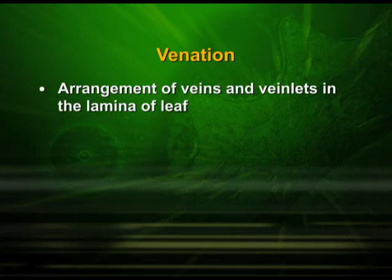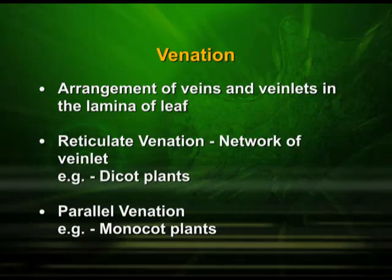These veins form veinlets and form a reticulate pattern. The arrangement of veins and veinlets in the leaf is known as venation. If we look at a dicot leaf, we can see the midrib and veins branching into veinlets forming a network — this is reticulate venation, generally found in most dicots. In case of monocots, the venation is parallel venation, where the veins run parallel to each other.